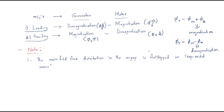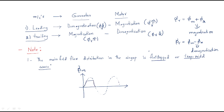The main field flux distribution in the air gap is a flat-topped or trapezoidal wave. The flat-topped wave means the top becomes straight rather than sinusoidal — the dotted line represents the sinusoidal waveform, but the actual main field flux wave has a flat top and a flat negative part. This waveform is also called a trapezoidal wave.